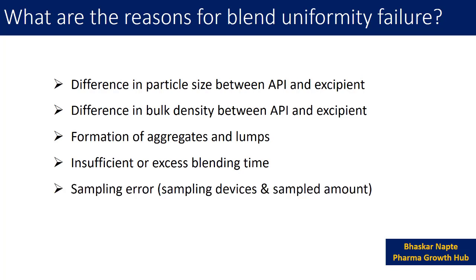The fifth point is very important: sampling error. This relates to the sampling devices you are using and the sample amount. The sampling device plays a very important role in determining the exact characteristics of the blend sample. Segregation of the sample can happen during the sampling process itself, and once segregation occurs, the sample's integrity is already lost, meaning you will not be able to reflect the actual uniformity of the blend during analysis.